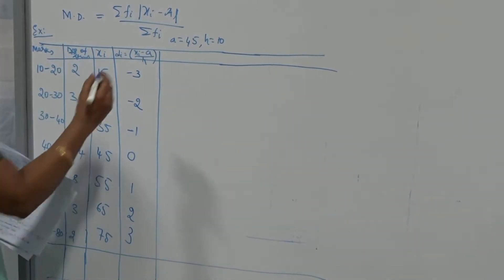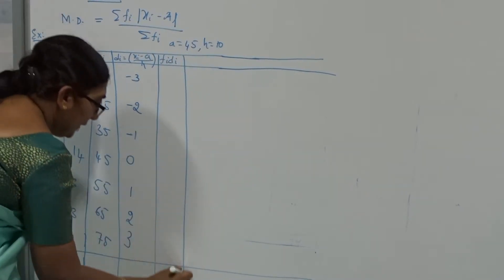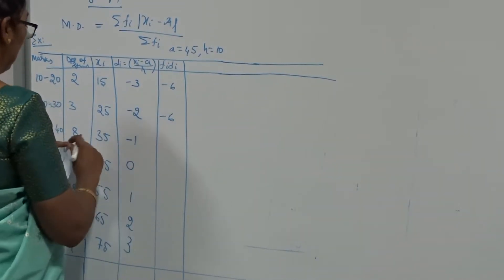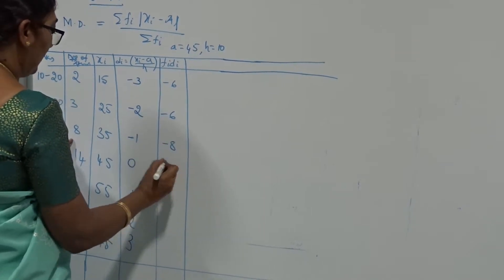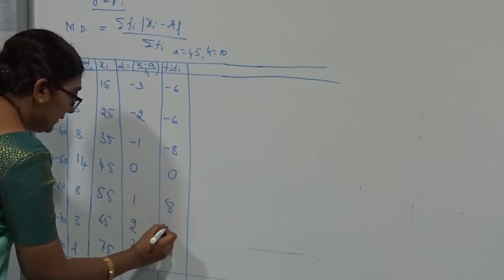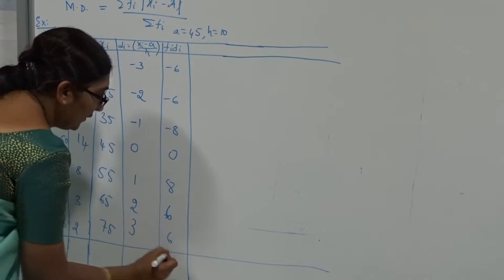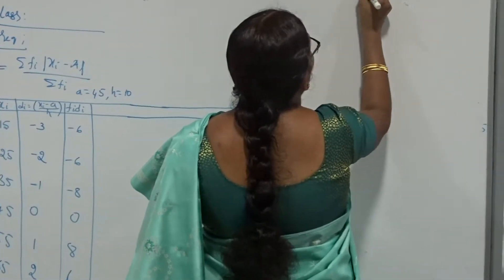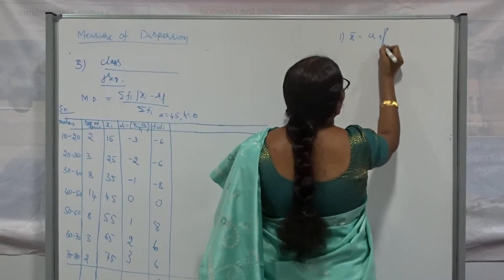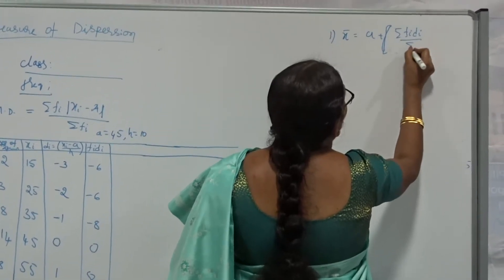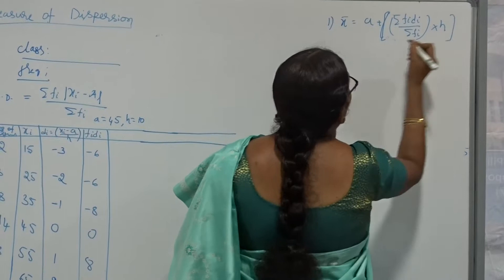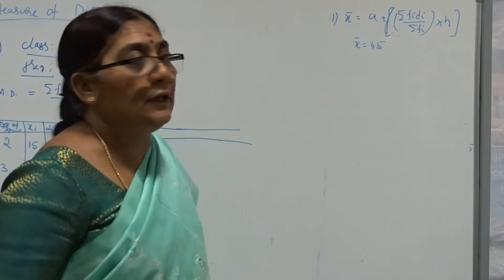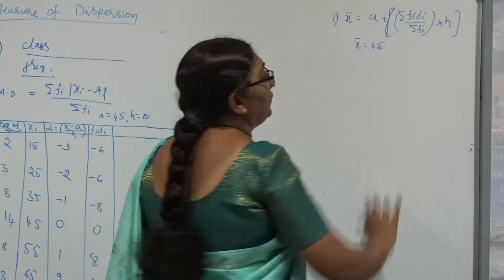Next, I calculate fi × di. The values are: 2×(−3) = −6, 3×(−2) = −6, 8×(−1) = −8, 14×0 = 0, 8×1 = 8, 6×2 = 12 — wait, let me correct: the fi×di values sum to 0. Once we get sigma fi×di = 0, we calculate the mean. The formula is: X̄ = a + (sigma fi×di / sigma fi) × h. Since sigma fi×di = 0, X̄ = 45.